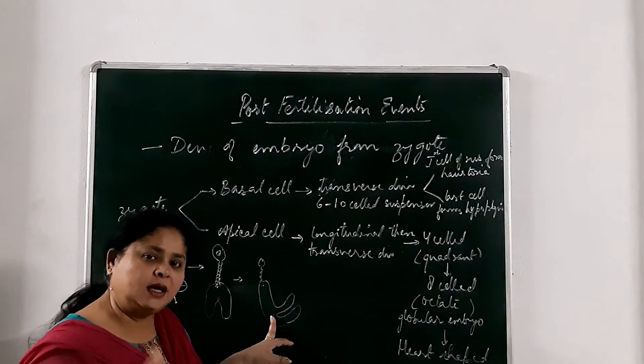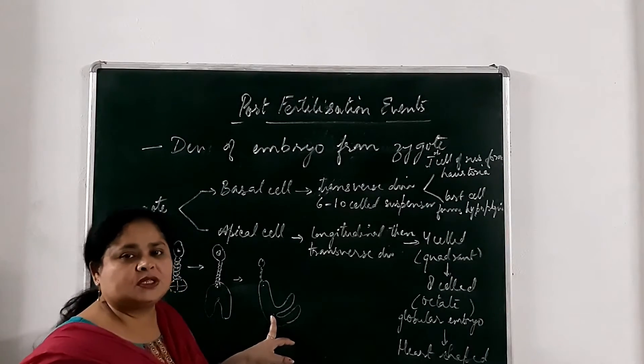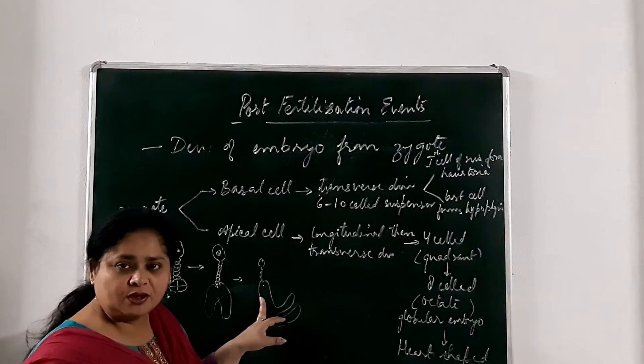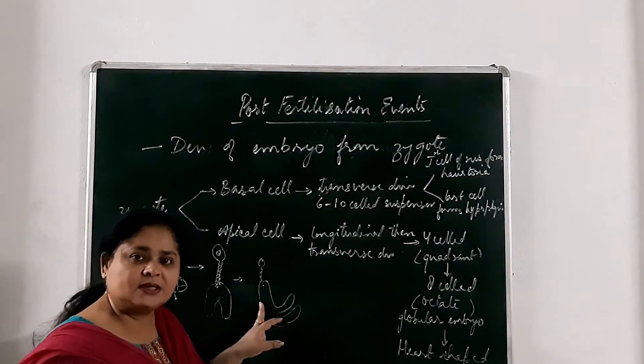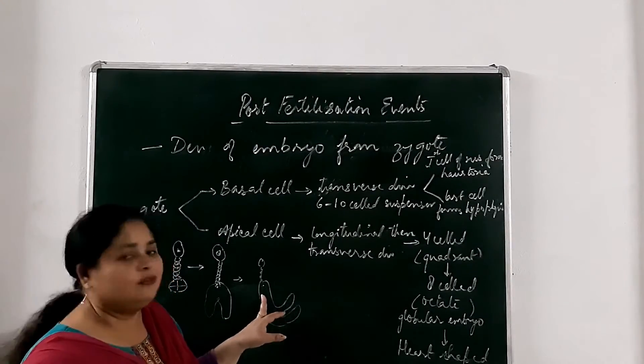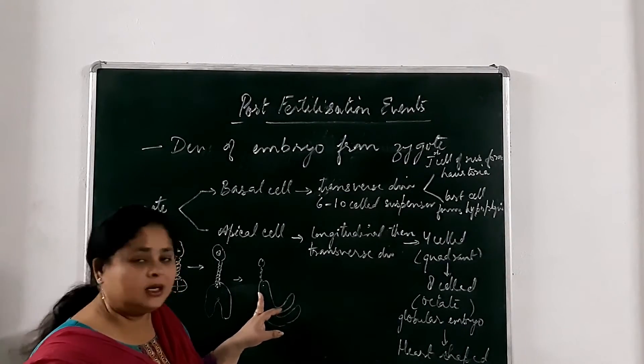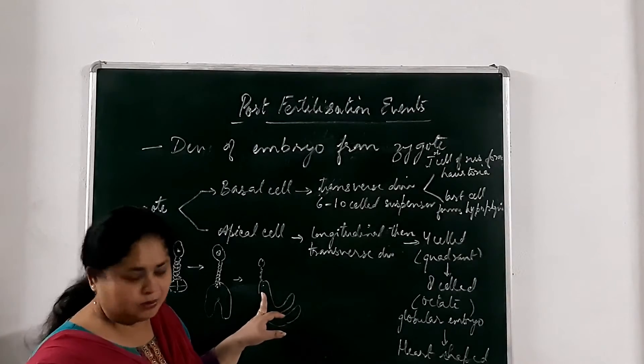And this plumule will form the shoot system of the new generation. And the portion of the embryo axis which is lower to the level of cotyledons will form the radical region. Radical which is the future root of the baby plant.